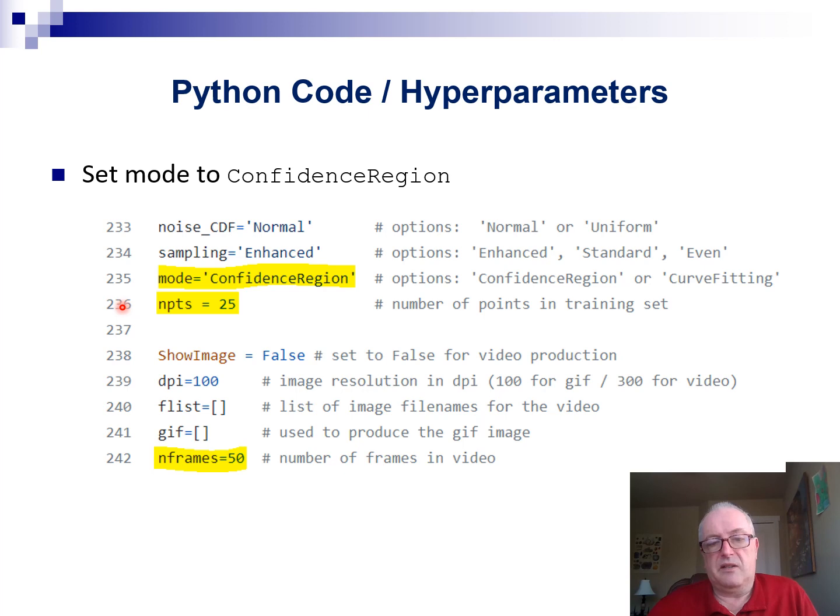Then NPTS here set to 25. That's the number of points that are observed on the meteorite. So it's kind of the locations that allow you to estimate the shape of the meteorite. And then on line 242, you have n-frames set to 50, which is the number of images that the code is going to produce.